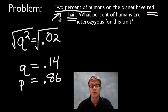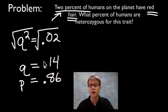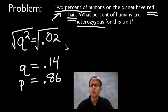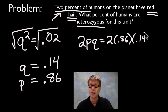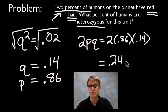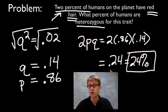If 2% of humans have red hair, that means if we took all the alleles of everyone on the planet and put them in one gene pool, 14% of those genes would be the red hair allele. Now for the actual question — what percent are heterozygous? Heterozygous individuals always equal 2PQ, which is 2 × 0.86 × 0.14, giving approximately 0.24, or about 24%. So almost a fourth of the people on our planet are carriers of the red hair trait.